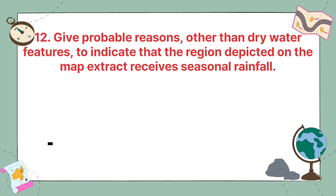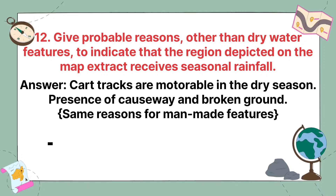Give probable reasons other than dry water features to indicate that the region depicted on the map extract receives seasonal rainfall. Cart tracks are motorable only in the dry season. There is also the presence of causeways and broken ground — these are the same manmade features discussed earlier.